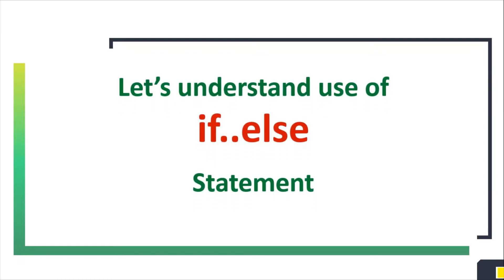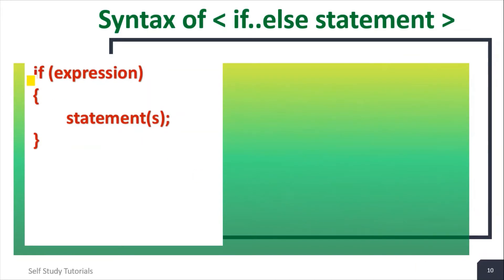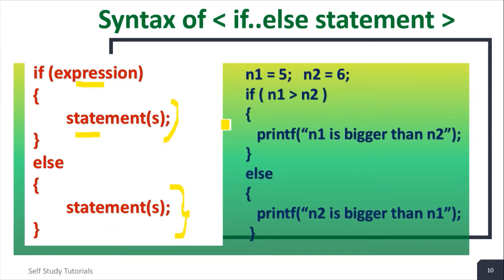Let's understand the use of the if-else statement. The syntax is slightly different. After the if block with its expression, one more keyword — else — is used. When the boolean expression is evaluated to true, the statements in the if block execute. When it is false, the statements in the else part execute. For example, with n1=5 and n2=6, the expression n1 greater than n2 is false, so the else part will be executed.